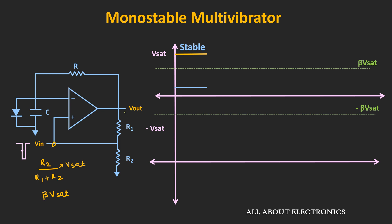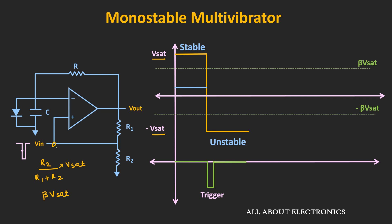Now let's say after a certain time, the trigger signal is applied at this node. Whenever this negative trigger signal is applied, momentarily the output at the non-inverting node becomes less than the voltage at the inverting node. So the output of the op-amp switches from positive saturation voltage to negative saturation voltage, and the circuit momentarily goes into the unstable state. The voltage at the non-inverting node will then be equal to −β·Vsat, or −Vsat × R2 / (R1 + R2).